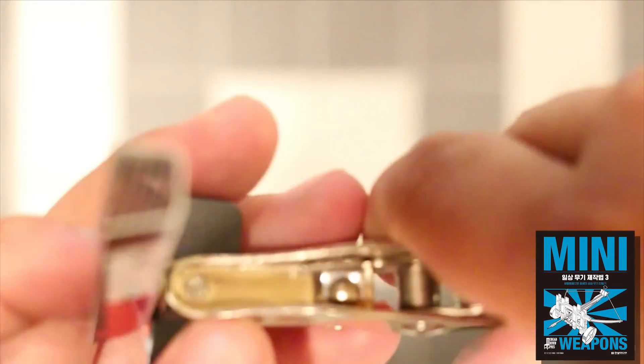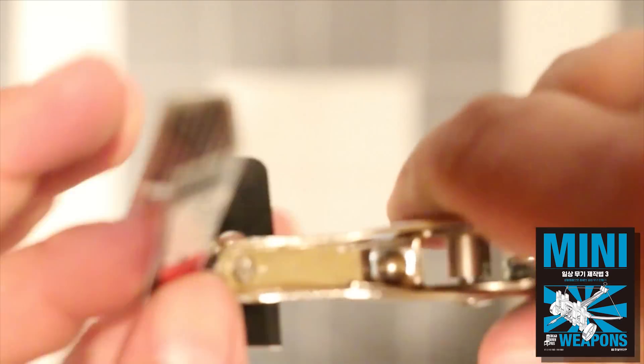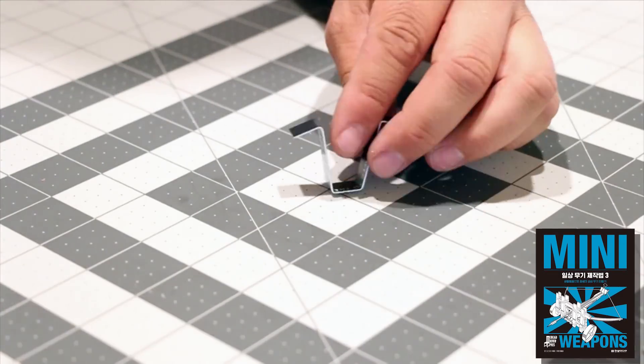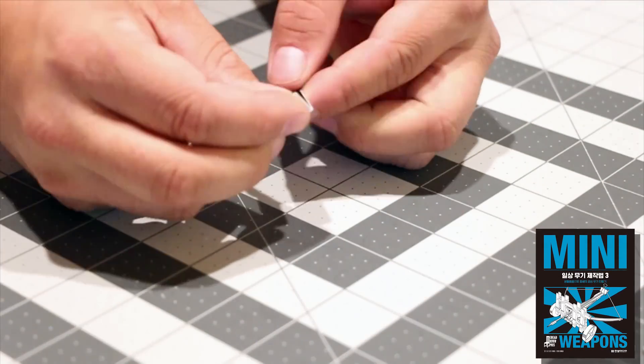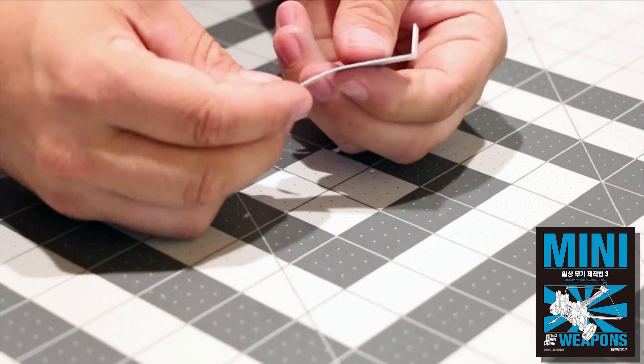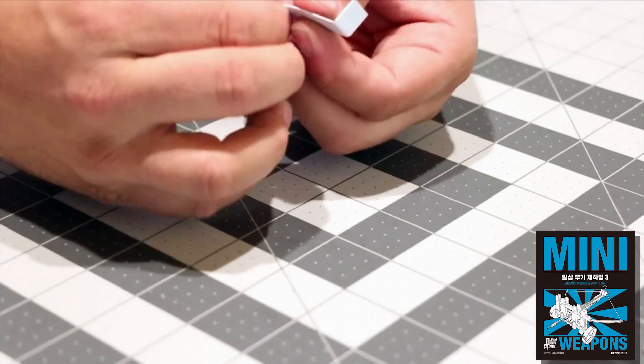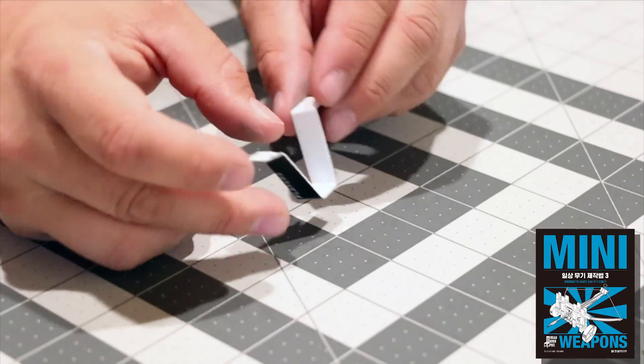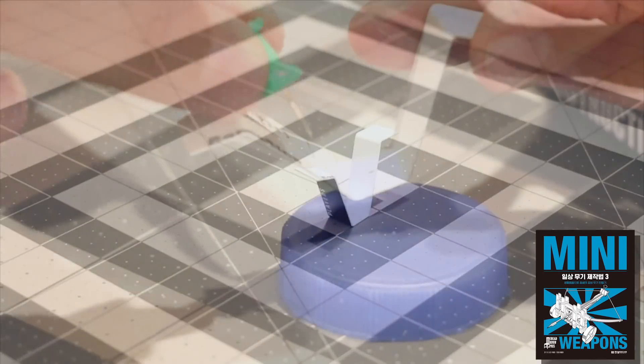With the hole punch, make one hole centered and approximately five sixteenth of an inch from the bottom of the front folded up face. Then fold one of the small card strips four times for a functional support.